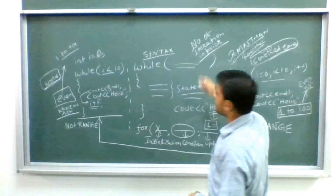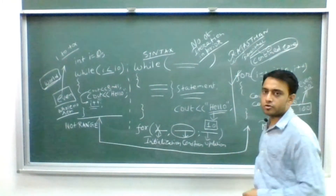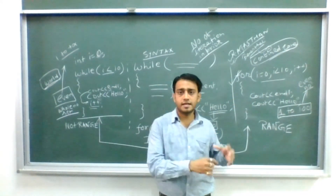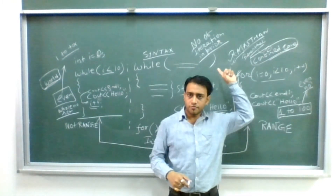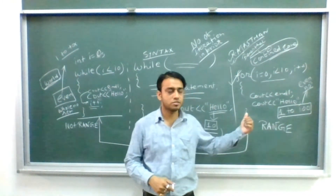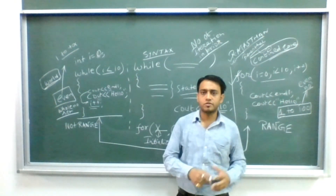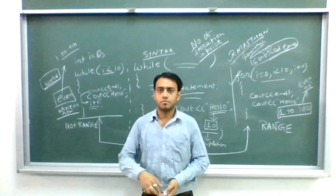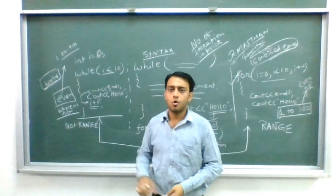If we know the number of iterations in advance, then we will be using the for loop. This is the technical difference between a for loop and a while loop. If we know the number of iterations in advance or in prior, we will obviously use the for loop. If we don't know the number of iterations in prior, then we will be using the while loop.